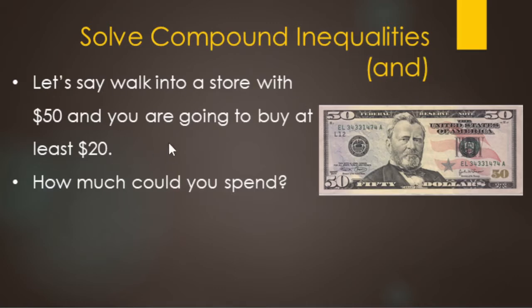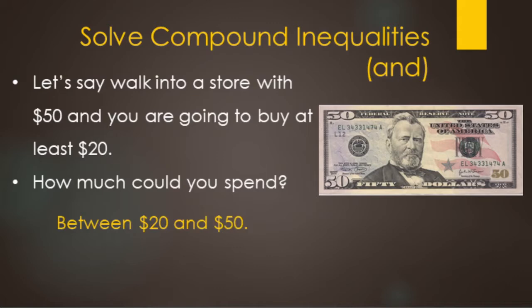A scenario that goes along with these and compound inequalities: let's pretend we're walking into a store with $50 in our pocket — that's the most we can spend. And whatever we're going to buy — candy, treats, whatever — it's going to be at least $20. So the question is, how much could you spend? Well, the answer is somewhere between $20 and $50, including both the $20 and the $50.